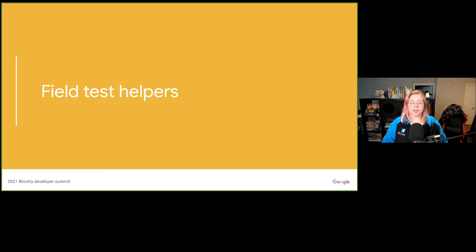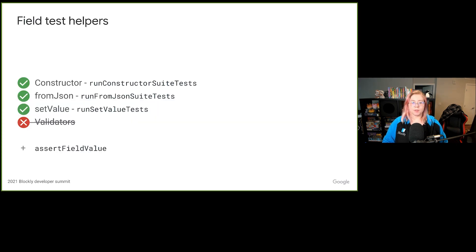Now let's get into the test helpers we provide for field tests. In the test helpers, there are specialized helpers written for running constructor, fromJSON, and set value field tests. Additionally, there's a general purpose helper function called assertFieldValue provided for asserting a field's value that should work for most fields. It compares the values returned from GetValue and GetText for the provided field against the expected values passed in.